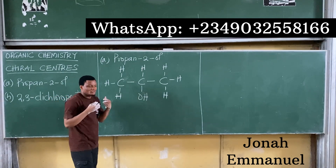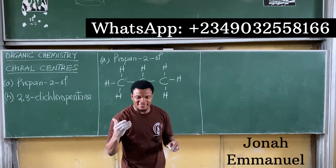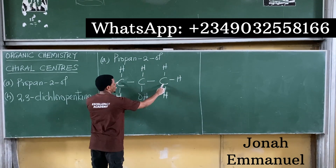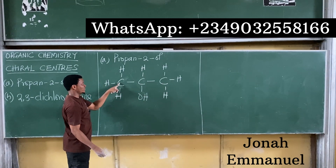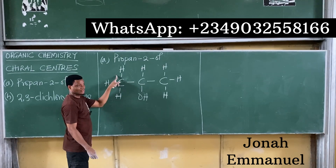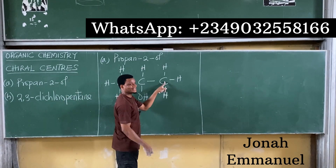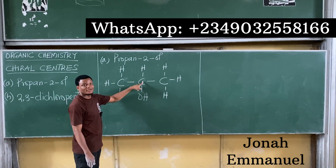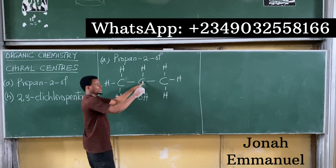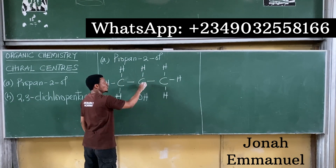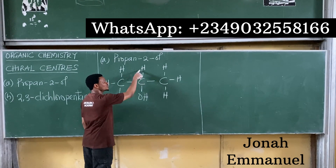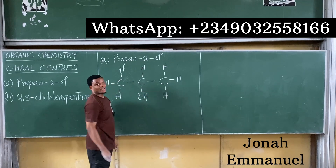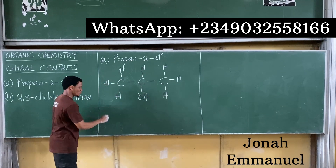Next, chiral centers. First: primary carbons cannot be chiral centers — carbons at the extreme already have repeated hydrogens. What about carbon two? Looking up I see H, looking down I see OH — those two are different. But these two side groups — both are CH3 — are the same thing. So carbon two is not a chiral center. Propan-2-ol has no chiral center.